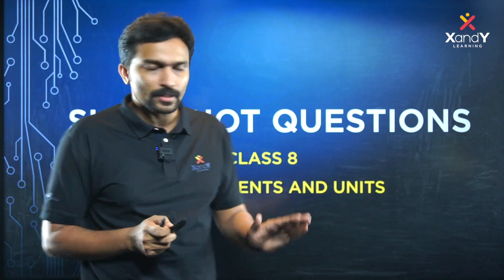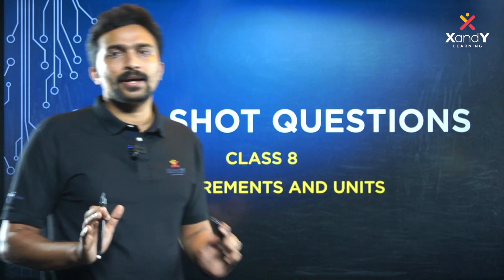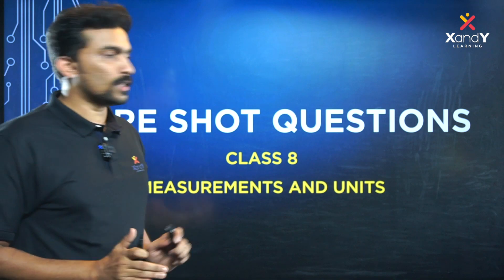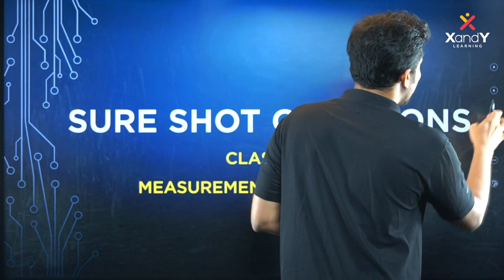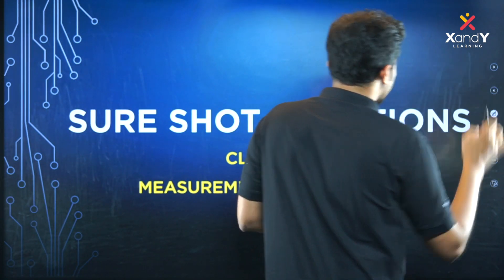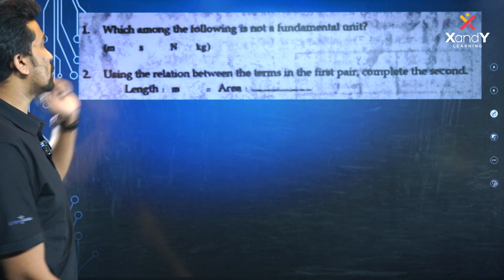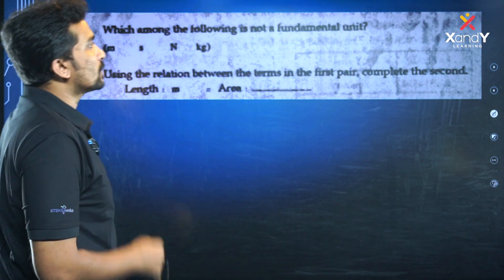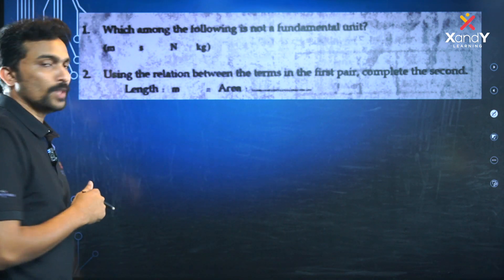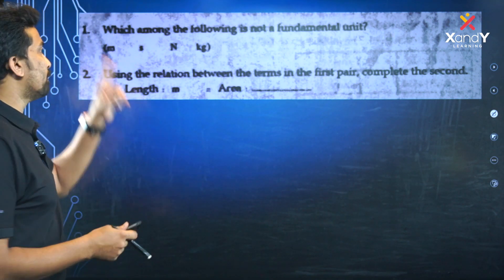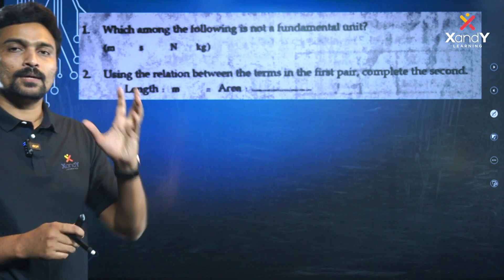This is the first chapter — Measurements and Units, which is very easy. Now the question: Which among the following is NOT a fundamental unit? The options are meter, second, newton, and kilogram. So we will talk about what fundamental units are.